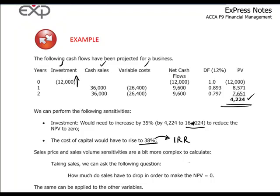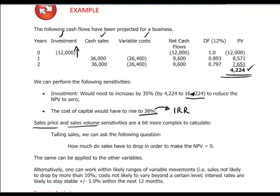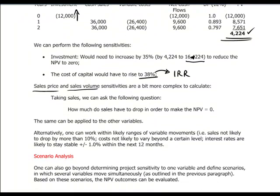Sensitivity analysis allows us to test for other variables — for example, asking how far sales volume would need to drop, or how far the sales price would need to fall, before our project ceases to become viable, i.e., where the NPV reaches the threshold level of zero. Sensitivities can test for each variable selected by the analyst.